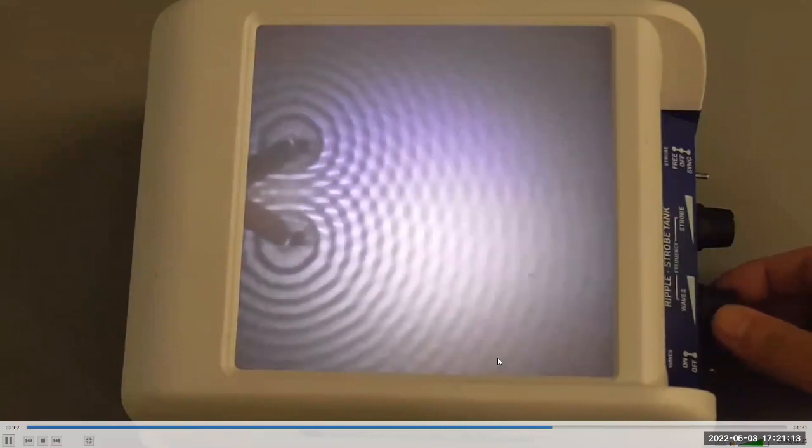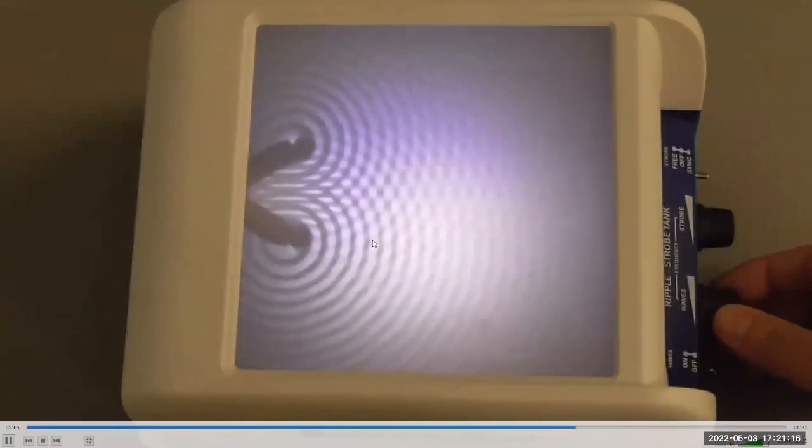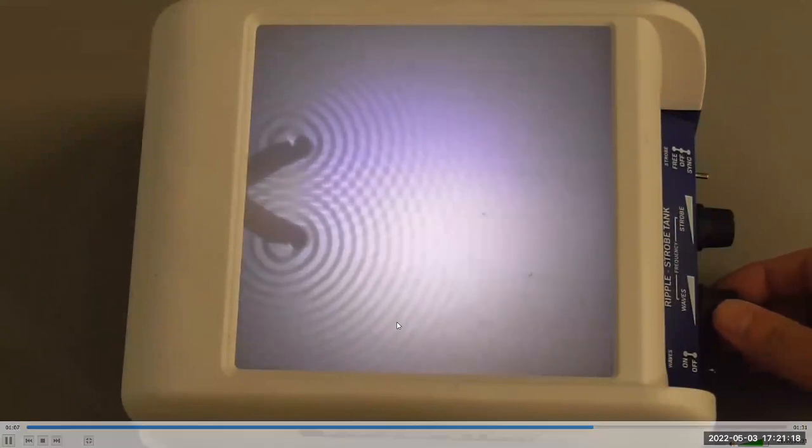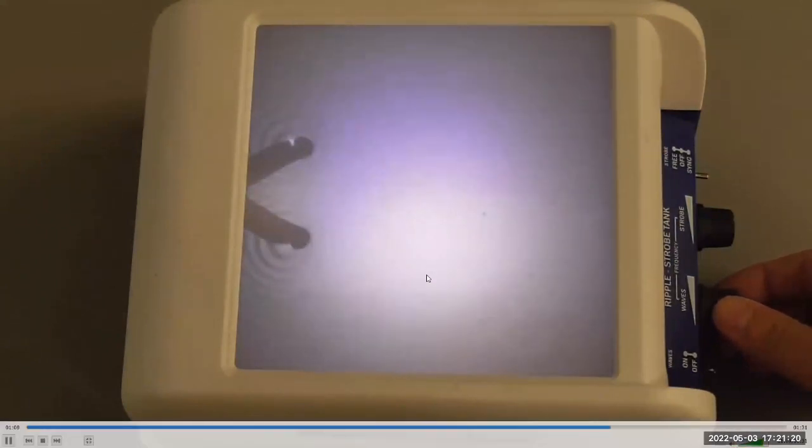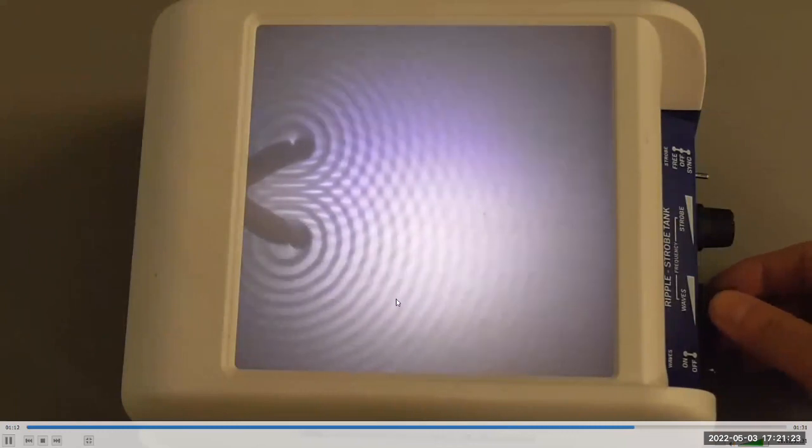And you can see how with the changing frequency and wavelength, the angle at which these lines go change. At higher frequency, they are closer together. At lower frequency, they are actually farther apart.